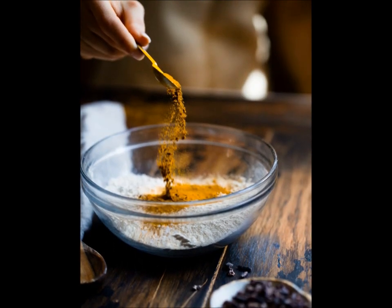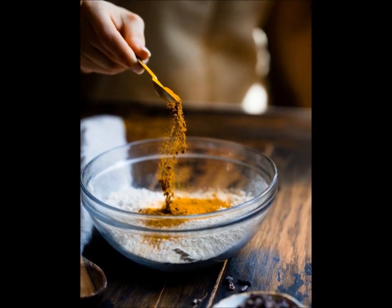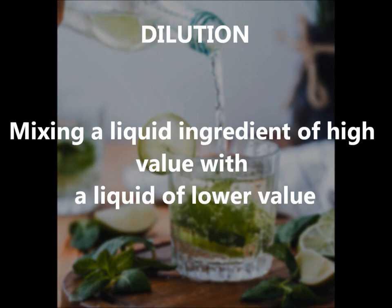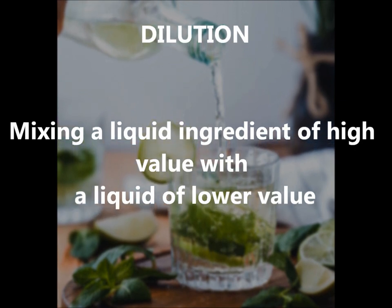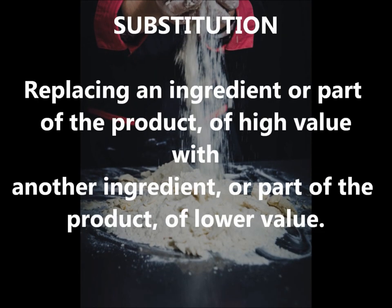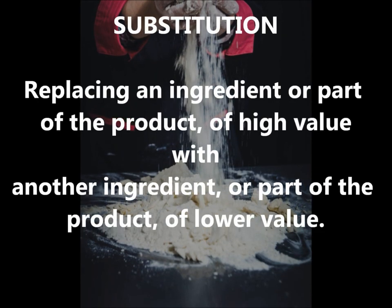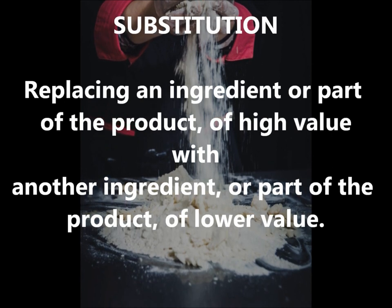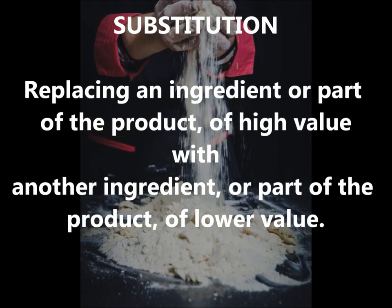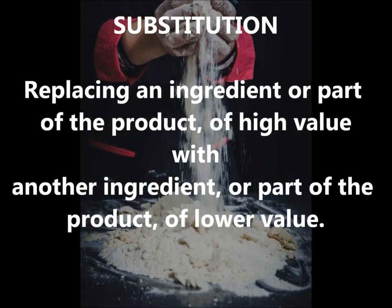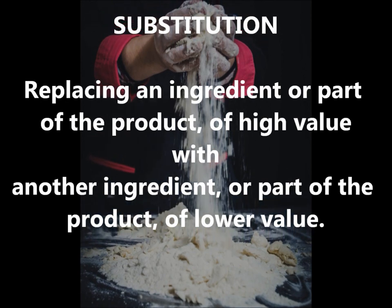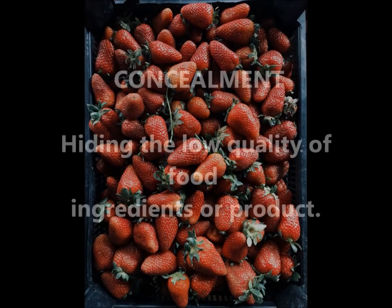Different ways of fraud in the marketplace include Dilution: mixing a liquid ingredient of high value with a liquid of lower value; and Substitution: replacing an ingredient or part of a product of high value with another ingredient or part of a product of lower value.